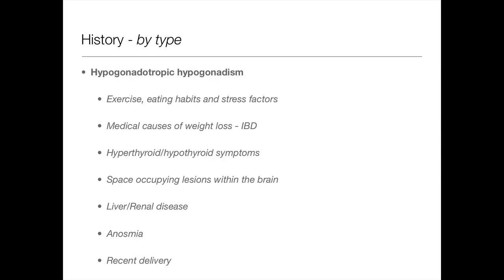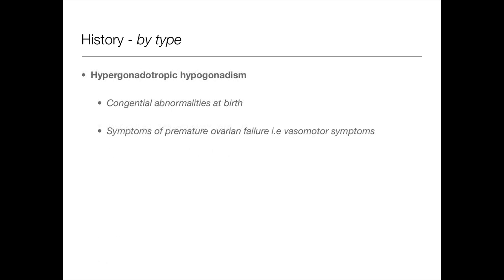For hypergonadotrophic hypogonadism, ask about congenital abnormalities at birth — things like Turner syndrome — where GnRH, FSH and LH are all released but there is ovarian failure, giving extremely high FSH and LH but no oestradiol. The problem is downstream. Also ask about symptoms of premature ovarian failure: are they getting vasomotor symptoms of menopause, such as hot flushes?